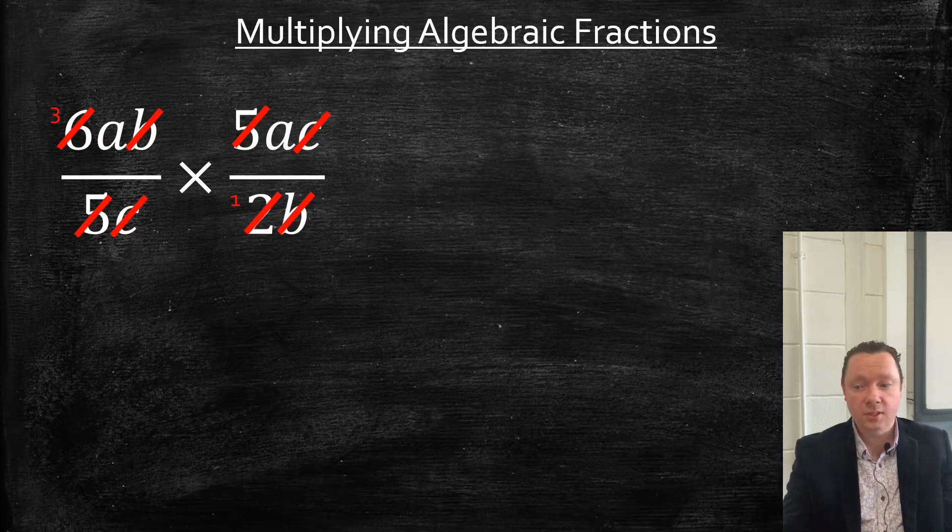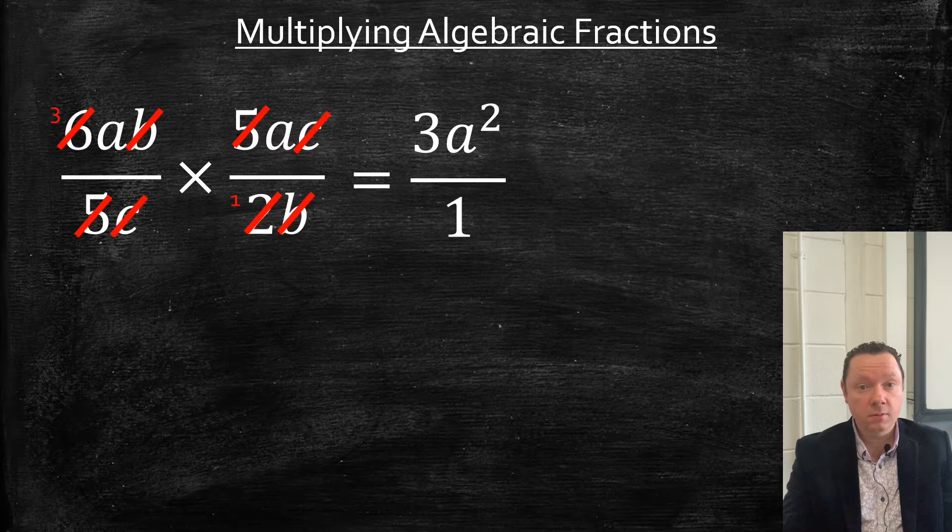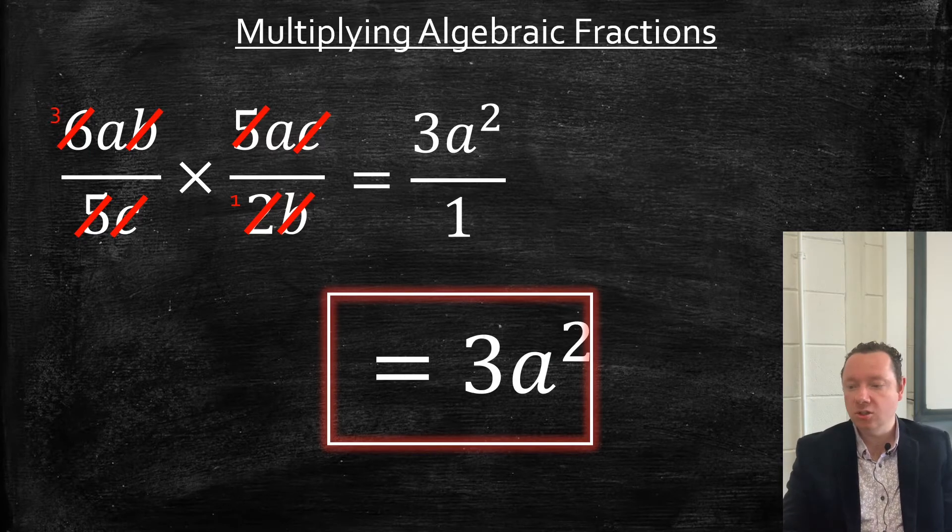So what's left? Well, on the top we've got 3AA, so 3A². And on the bottom we've got just a 1. If everything's gone, it's 1. So we don't need the 1. So the answer's just 3A².